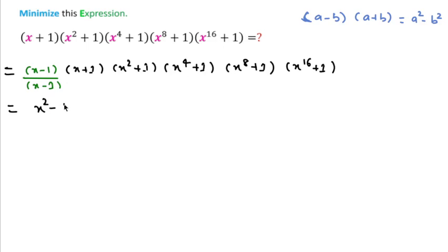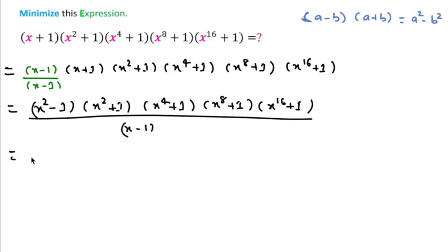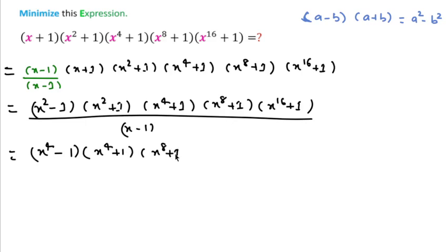So we can write this as (x²-1)(x²+1)(x⁴+1)(x⁸+1)(x¹⁶+1) over (x-1). Similarly, applying the formula again where a is x², we can write (x⁴-1)(x⁴+1)(x⁸+1)(x¹⁶+1) over (x-1).